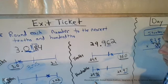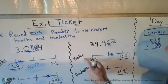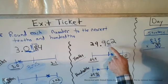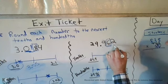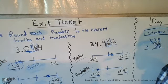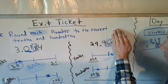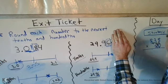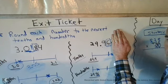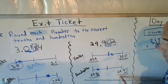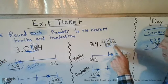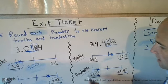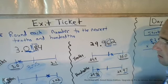Rounding to the nearest hundredths place — if this is my hundredths place, I want to look at the thousandths place to decide where to round it to. My first option is twenty-nine and ninety-six hundredths; I could round it there, or one more than that is twenty-nine and ninety-seven hundredths. I look at the two — four and below, you let it go — so the answer here would be twenty-nine and ninety-six hundredths.